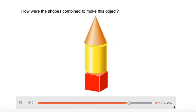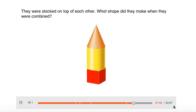How were the shapes combined to make this object? They were stacked on top of each other. What shape did they make when they were combined?